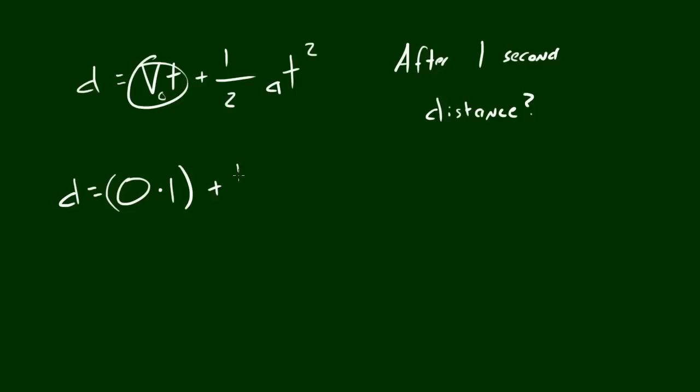So now what we need to do is we need to add 1 half acceleration. Now acceleration of gravity is always 9.8, and I'll just throw that into parentheses. And time passed squared. So the time passed is 1, and I'm going to square that. So if you go ahead and figure all this out, it's basically this. 1 squared is 1, so it's basically 1 half times 9.8.